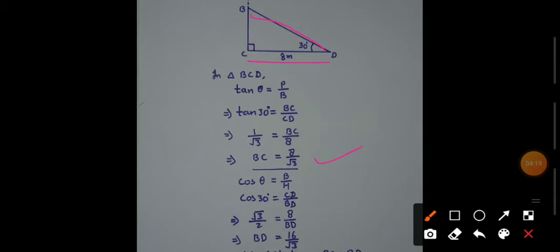We will apply the formula cos theta equal to B upon H. Theta value is 30 degrees, base is CD, and hypotenuse is BD. Cos 30 value is root 3 by 2 equals 8 over BD. When we cross multiply, BD equals 16 by root 3.